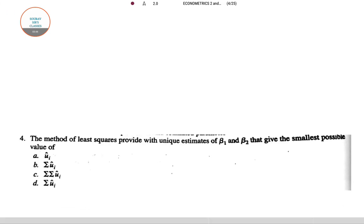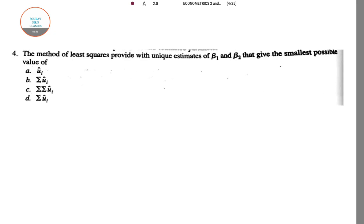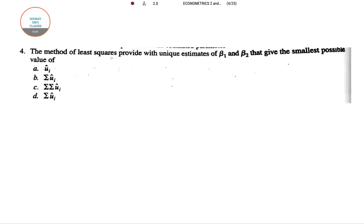Next question is 4. The method of least square, this is again on the least square structure they have given. Provide with unique estimates of beta 1 and beta 2. Remember that this is the beta 1 and beta 2 not the estimate values they are talking. This smallest possible value of this actually is dependent on for example yi equal to alpha plus beta xi plus ui.